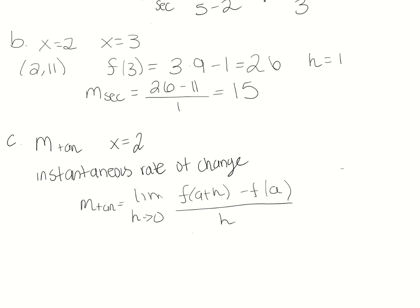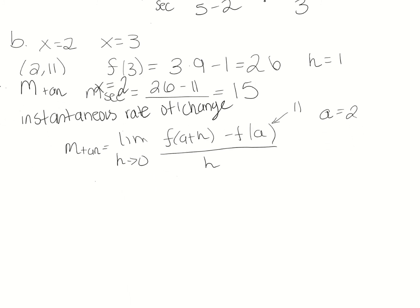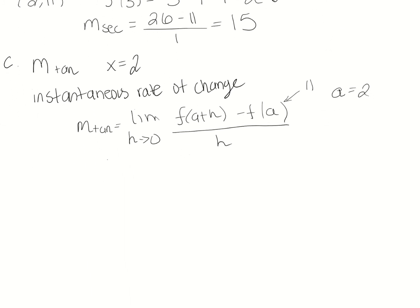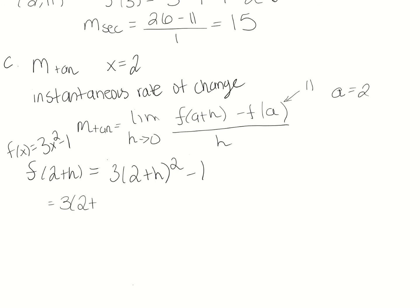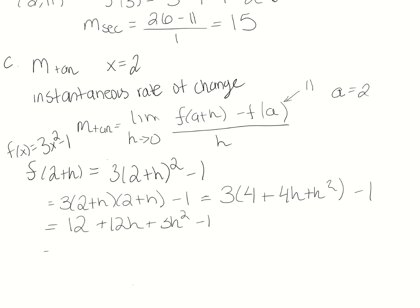Since f(x) = 3x² - 1, we get f(2+h) = 3(2+h)² - 1. Don't distribute the square directly — squaring means multiplying (2+h) twice. FOILing gives 4 + 4h + h², then distributing the 3 gives 12 + 12h + 3h² - 1, which simplifies to 11 + 12h + 3h².